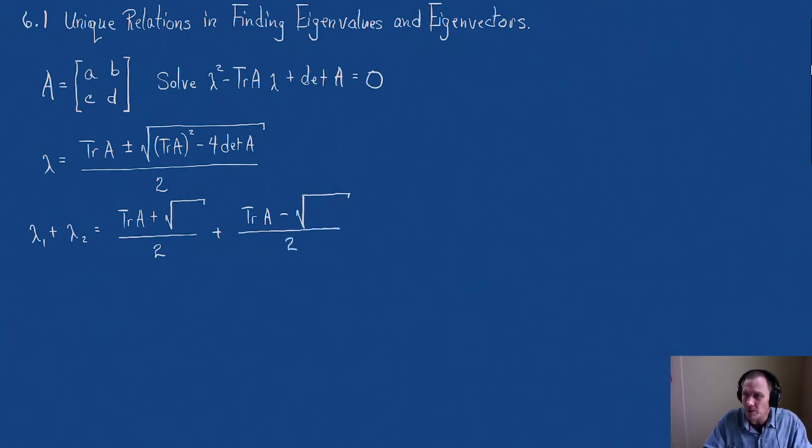Well, notice what happens when I add these two. When I add these two, I get the trace of A times 2. The discriminant, the whole square root goes away, over 2. Well, that is very simply that the trace of A plus the trace of A, that's 2 times the trace of A divided by 2, we're left with the trace of A.